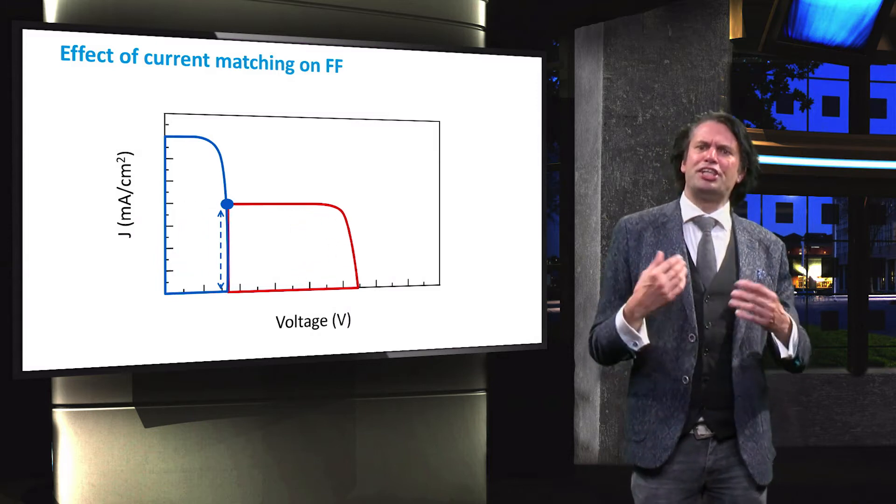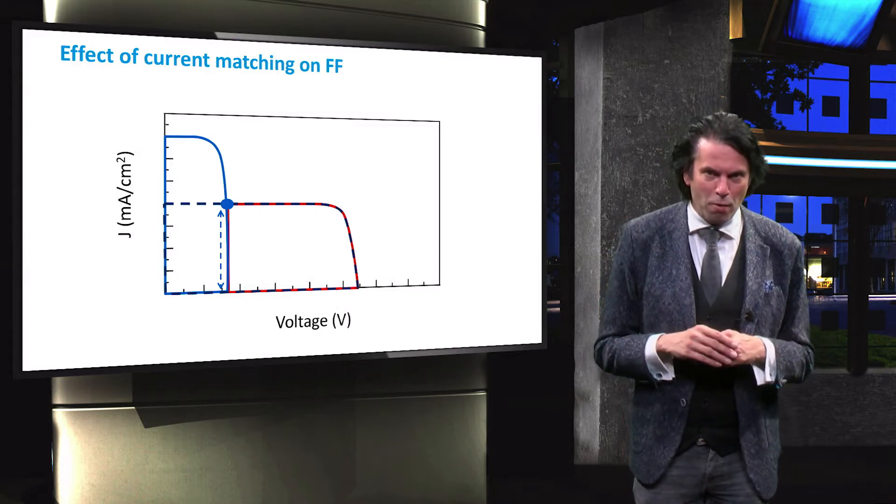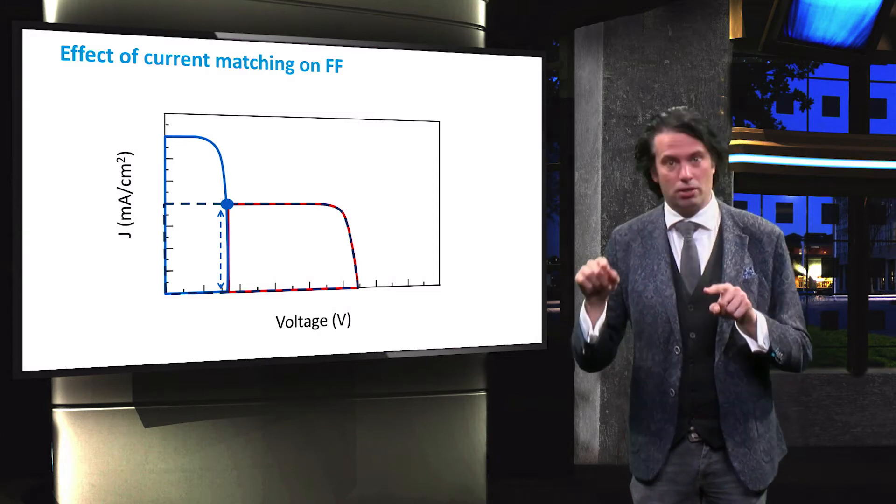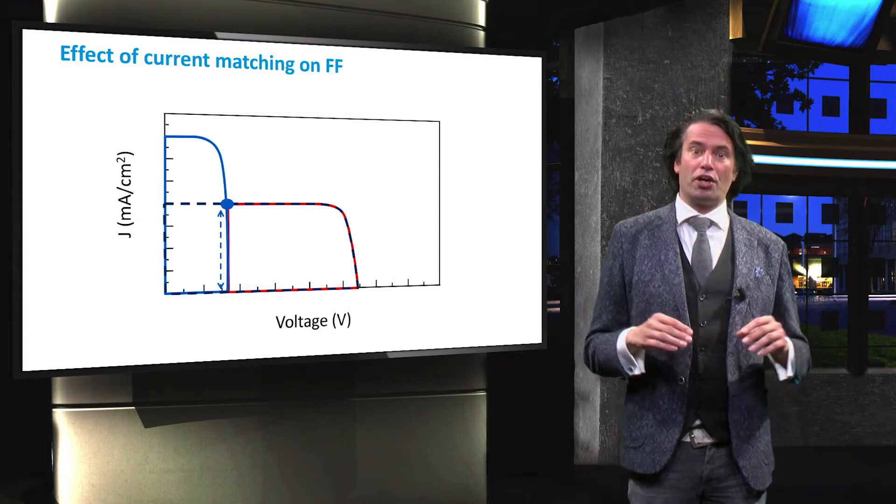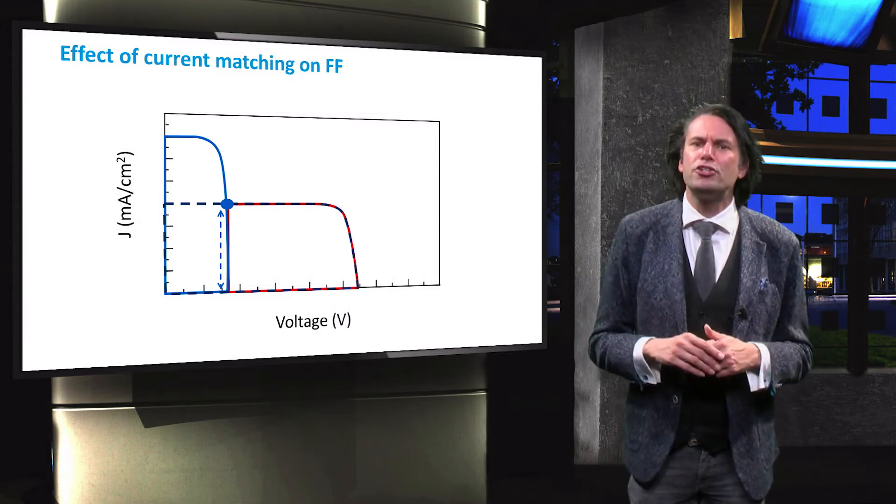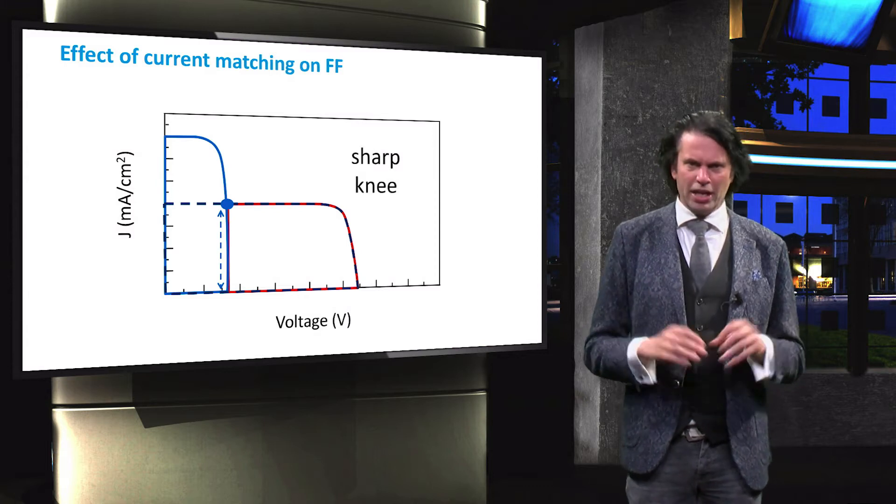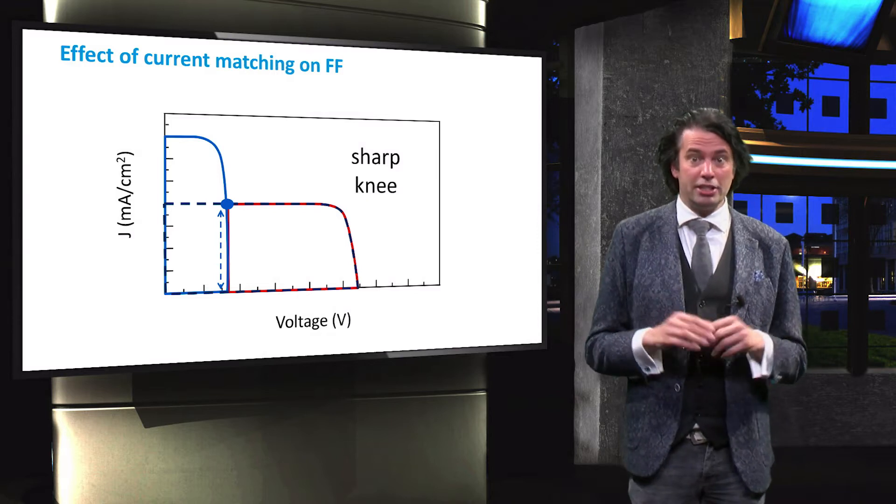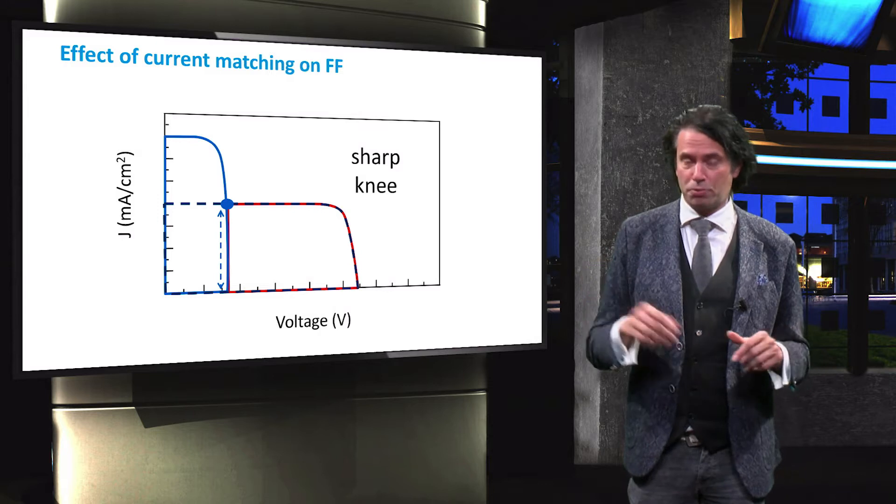This means that the shape of the JV curve around the maximum power point is mainly determined by a single junction, in this case the top cell. The squareness of the JV curve, or in other words the fill factor, is mainly determined by the limiting junction. It means that the knee around the maximum power point is relatively sharp. This can even result in higher values of the fill factor in reference to the sub-cells.